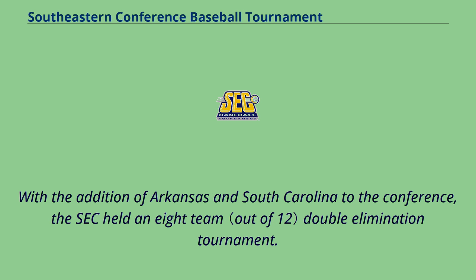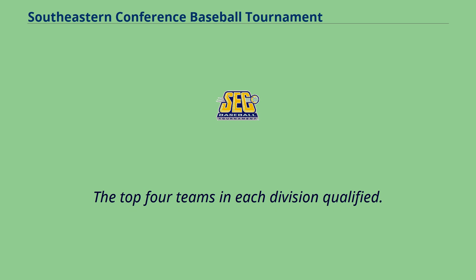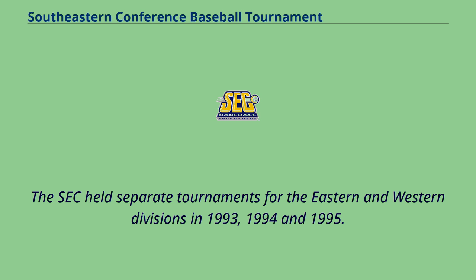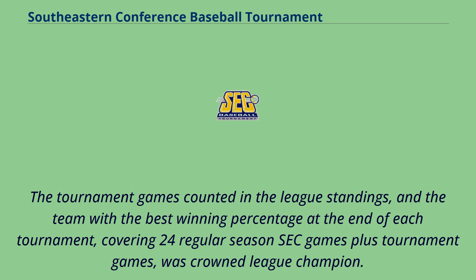With the addition of Arkansas and South Carolina to the conference, the SEC held an eight-team double elimination tournament. The top four teams in each division qualified. The tournament followed a format that included reseeding the teams once only four were still active in the tournament. The SEC held separate tournaments for the Eastern and Western divisions in 1993, 1994, and 1995. The tournament games counted in the league standings, and the team with the best winning percentage at the end of each tournament, covering 24 regular season SEC games plus tournament games, was crowned league champion.